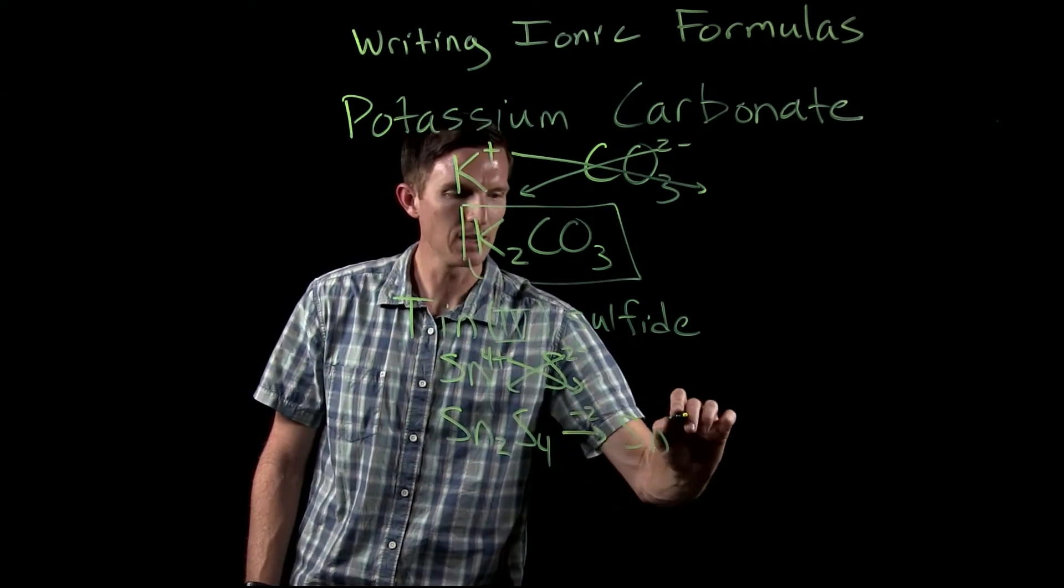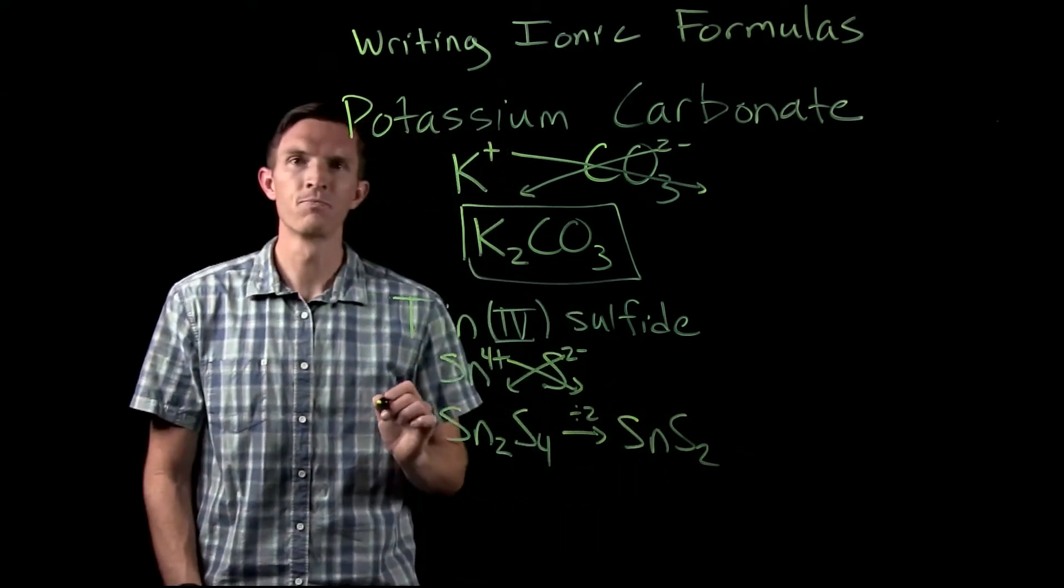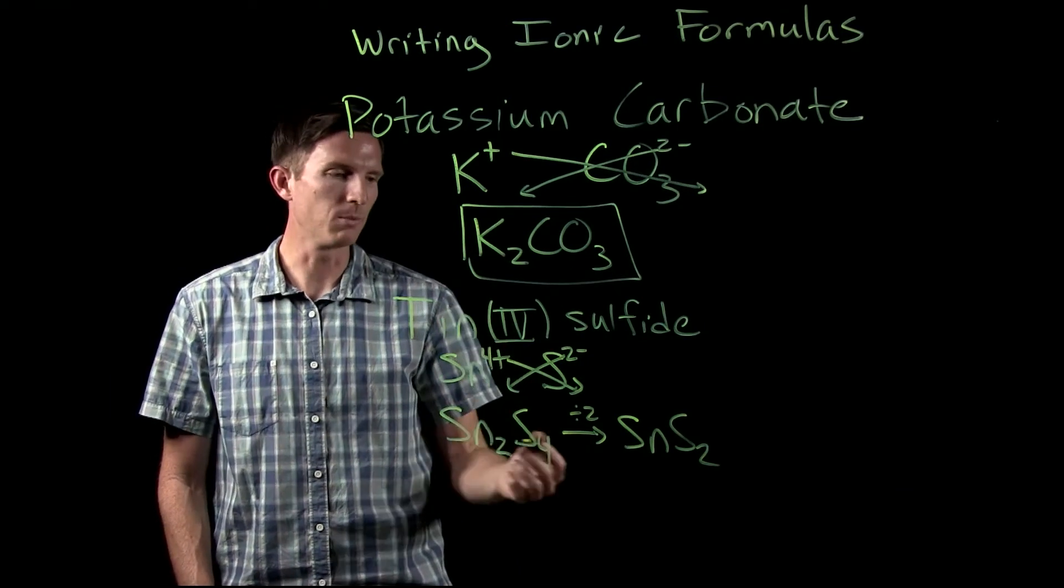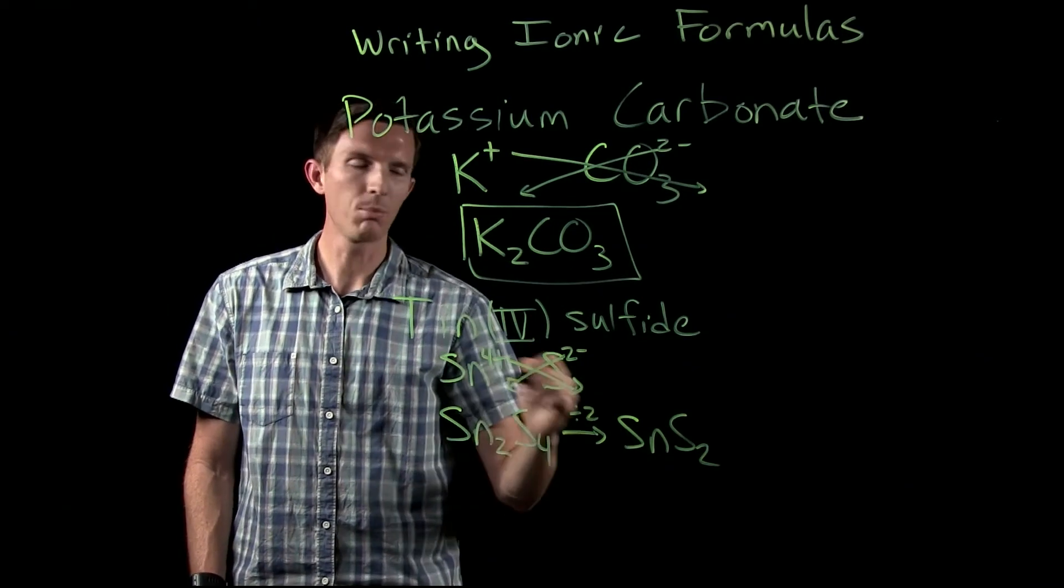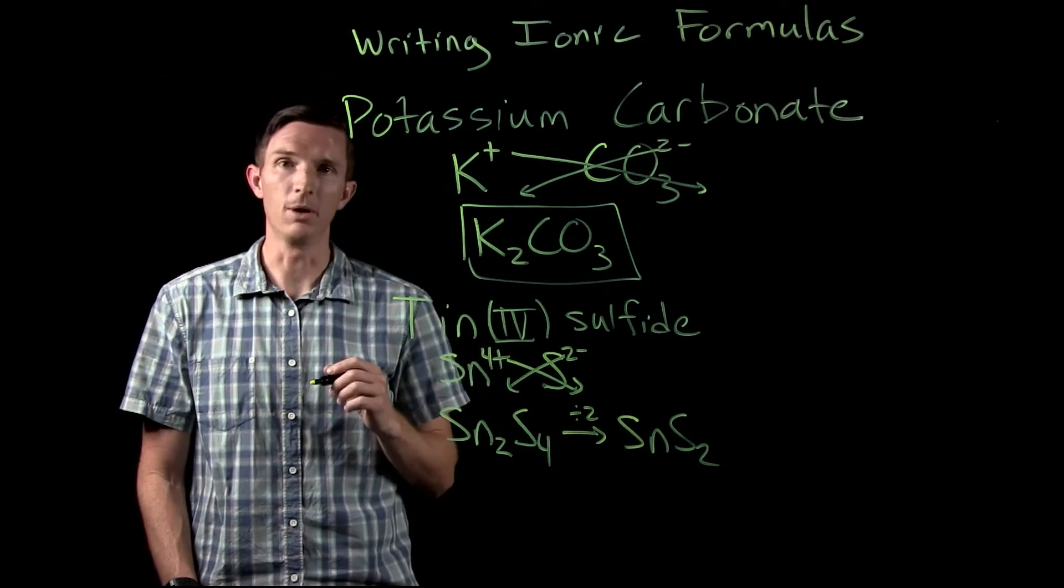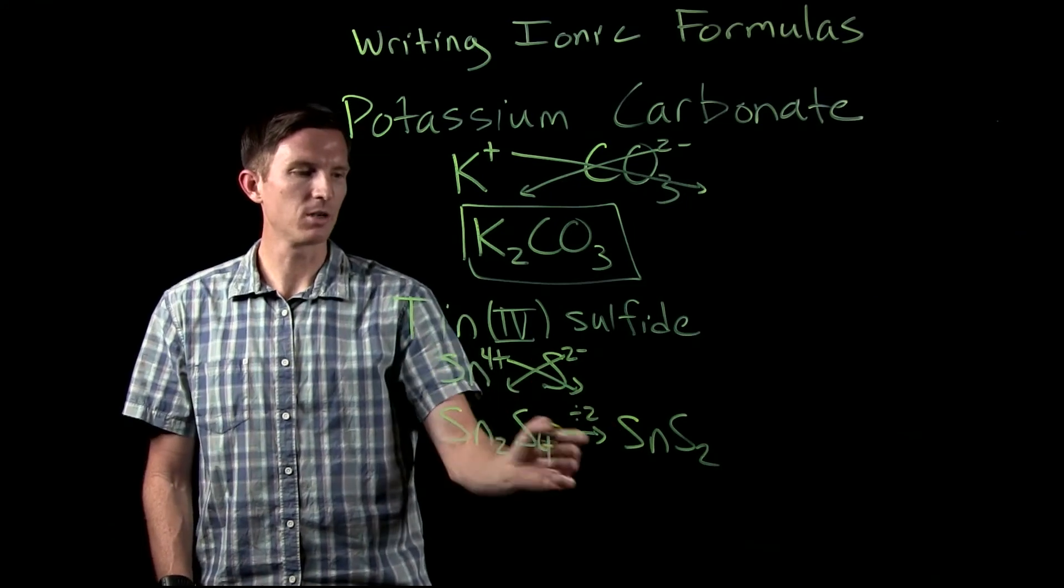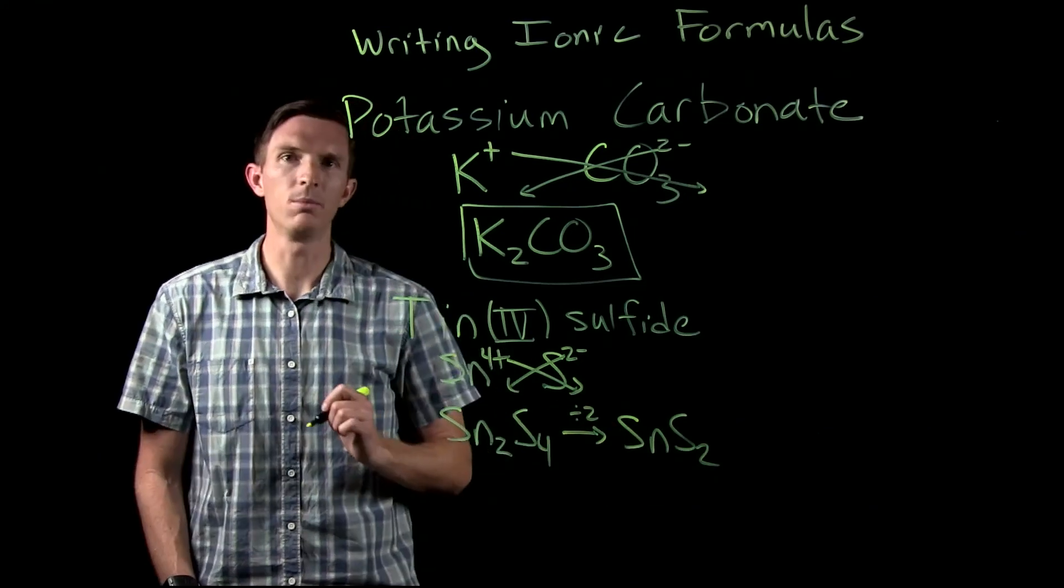This isn't the lowest possible ratio right now, 2 and 4. So we divide both of those subscripts by 2. That gives us SnS2, our neutral chemical formula. We applied the criss-cross rule, but we had to reduce the subscripts for each of these.